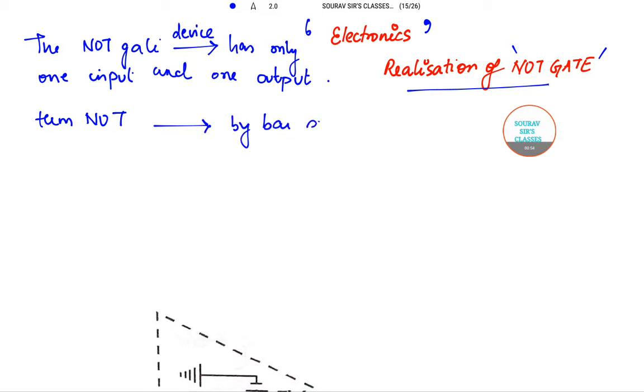In case of boolean algebra, the term NOT is actually represented by bar symbol, and the boolean expression A bar equals Y actually indicates that Y equals NOT A. This is what we have covered in our previous tutorial, so this was a little bit of recapitulation.